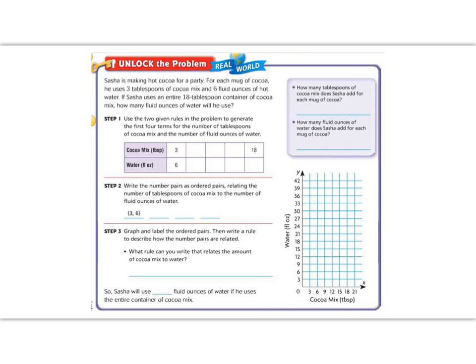It says for each mug, he needs three tablespoons of cocoa. Our second question says how many fluid ounces does it take for each mug? And it tells us six fluid ounces.